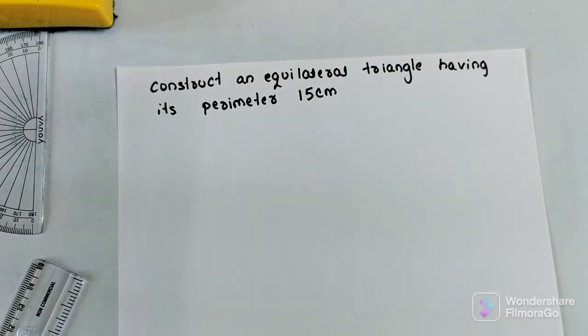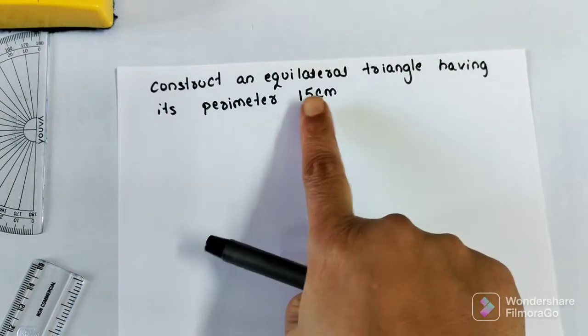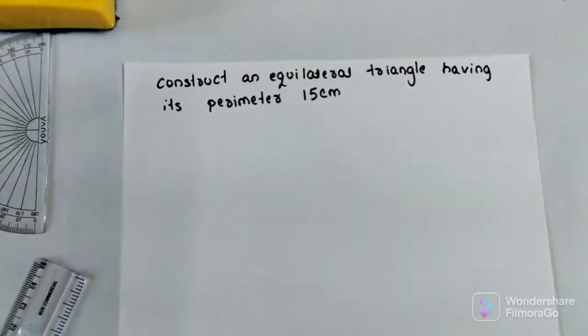Hello friends, welcome to my channel. Today's topic is how to draw the equilateral triangle when the perimeter is known.